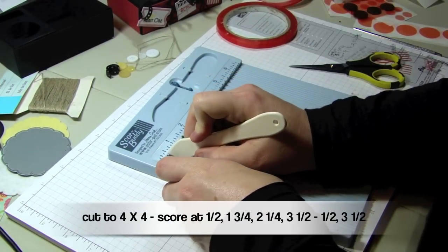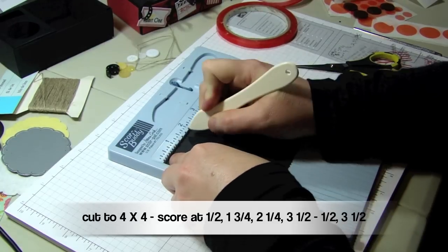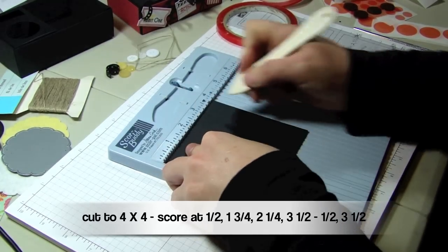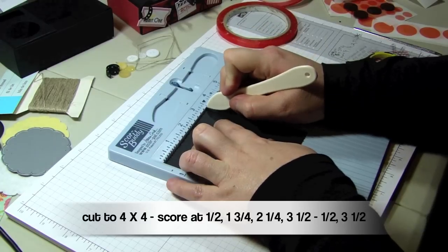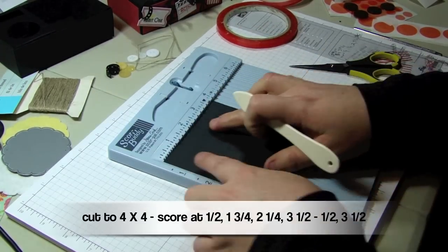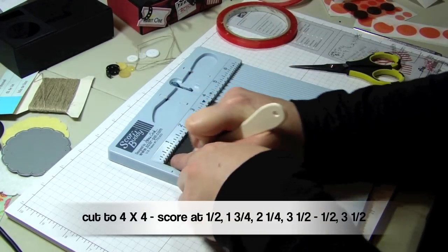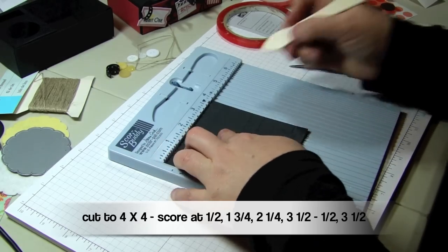Next up we're going to make the candy box. We're going to cut the paper to four inches by four inches. Score it one half inch, one three quarter inches, two and a quarter inch. Then turn your paper and score it one half and three and a half.